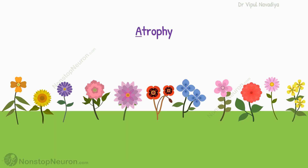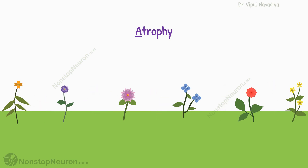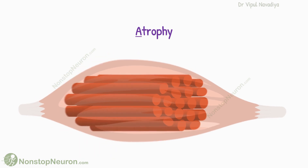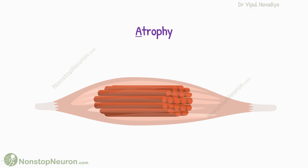Finally, atrophy is like your garden becoming neglected and the flowers wilting. If you stop watering your plants and providing them with sunlight, they will begin to wither and shrink. Similarly, when you don't use your muscles for an extended period, they can become smaller and weaker. This is muscle atrophy, where the lack of muscle use leads to a decrease in muscle mass and strength.